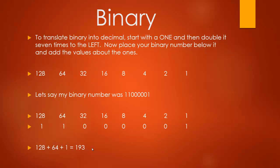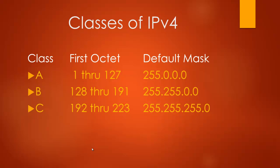Hopefully that covers your binary stuff and refreshes that for you. With IPv4 we talk about the first three classes: A, B, and C. The very first octet, the first number in the IP address, tells you what class it is. If that first number is 1 through 127, it is a class A. Some charts tell you 1 through 126 — that's the usable class A. 127 is actually a class A IP address.